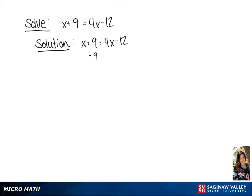We're going to start by subtracting 9 from each side. This gives us x equals 4x minus 21.